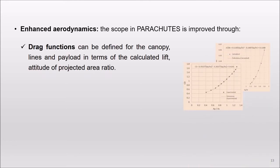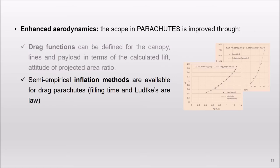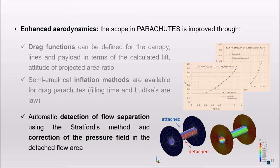It is important to note that the base inviscid solver in ParaJuice is improved to incorporate viscous effects in different ways. For example, the user can define drag functions for the canopy, payload, and suspension lines. Inflation models are applied for drag parachutes. And we developed a method for the simulation of extensive detachment around blunt bodies, which automatically determines the flow-separated areas and corrects the inviscid pressure field. This is mainly intended for applications to inflatable buildings, but it is planned to be used also in parachutes.